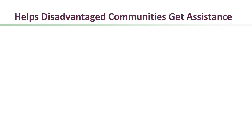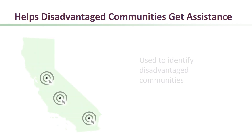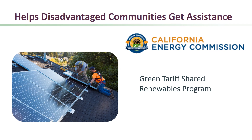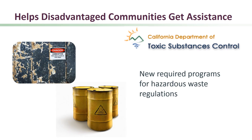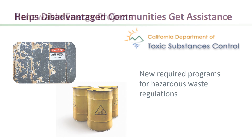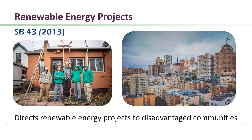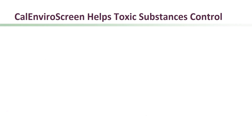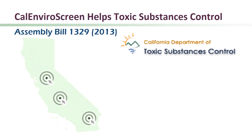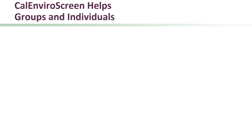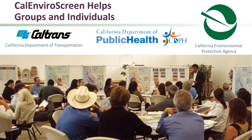In addition to the uses we've described, CalEnviroScreen is being used by other programs to identify disadvantaged and burdened communities. These communities will receive services and assistance that might not otherwise be available. Programs include the California Energy Commission's activities under the Green Tariff Shared Renewables Program, and the Department of Toxic Substances Control's responsibilities under new hazardous waste regulations. Senate Bill 43 directs renewable energy projects to disadvantaged communities identified by CalEnviroScreen. Under Assembly Bill 1329, the Department of Toxic Substances Control prioritizes enforcement in communities identified by CalEnviroScreen. CalEnviroScreen is being used by other state and local agencies as well, and by community groups and individuals.